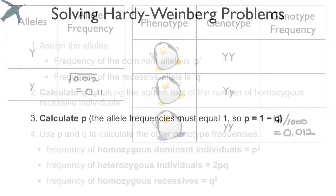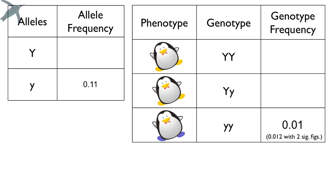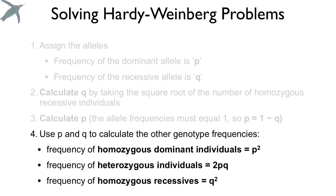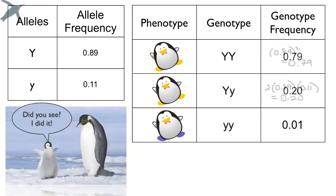Once you have Q, you can easily get P, because P + Q = 1. Subtracting 0.11 from 1 gives P = 0.89. I'm rounding everything to two significant figures. Once you have P and Q, you can calculate all genotype frequencies: the frequency of homozygous dominant individuals is P² = 0.89² = 0.79; the frequency of heterozygous individuals is 2PQ = 2 × 0.89 × 0.11 = 0.20; and Q² = 0.012 for homozygous recessive. The table is now complete — you can fill it out entirely just by knowing the number of homozygous recessive individuals.